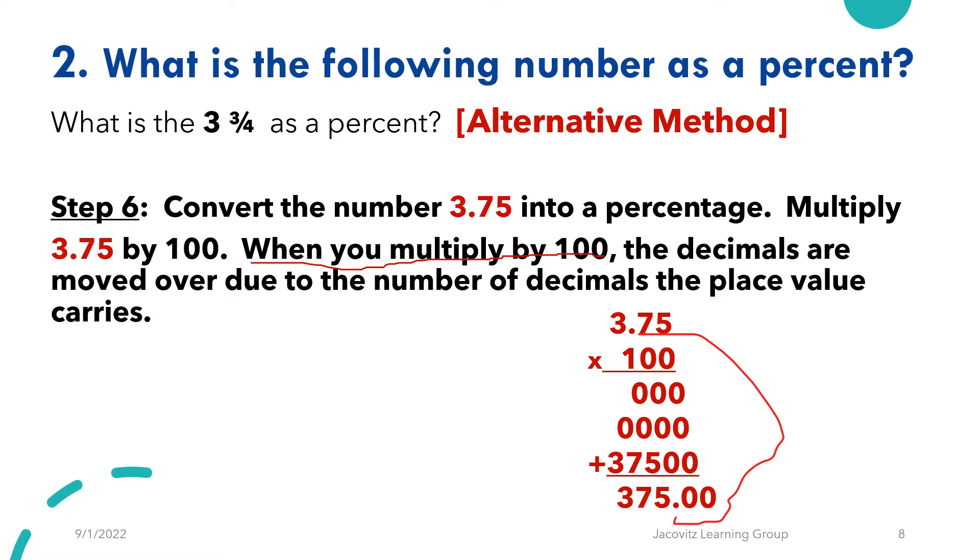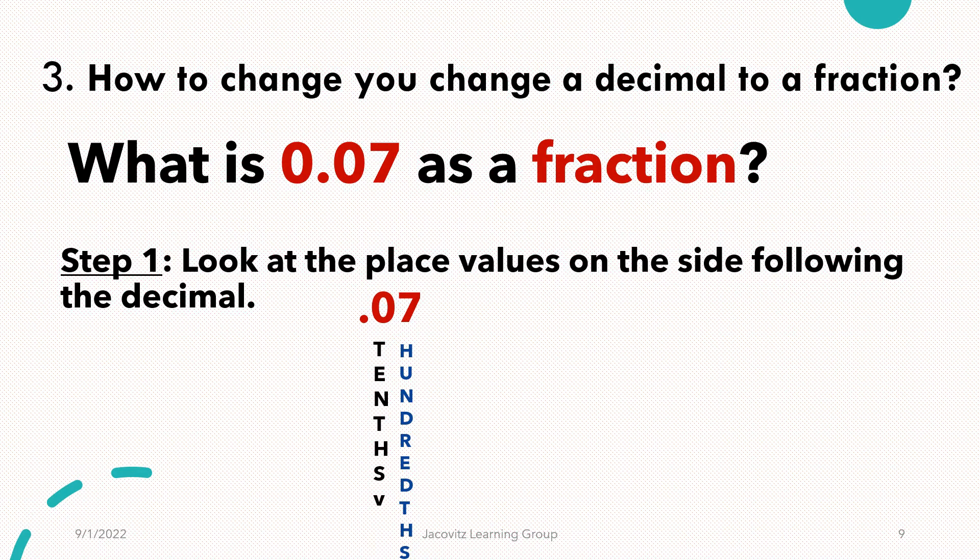But since this is here, this is now tenths, hundredths, and this is your unit place. So since you have three digits here, you go 3.75 times a hundred. That now gives you 375. This number here, 375, is before the decimal. That now becomes your percent. And here it was on the slide. It's 375%. You can review this later.